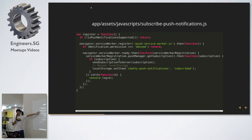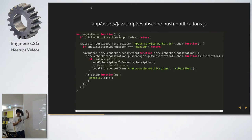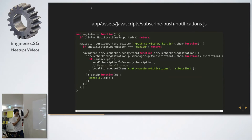Then you have to check for a bunch of stuff — you check for permission. Whenever you enable push notifications, the browser will actually ask you for permission: do you allow it or do you want to disable it for this webpage? If the user has totally denied permission to show any form of notification, you just return and forget about everything.